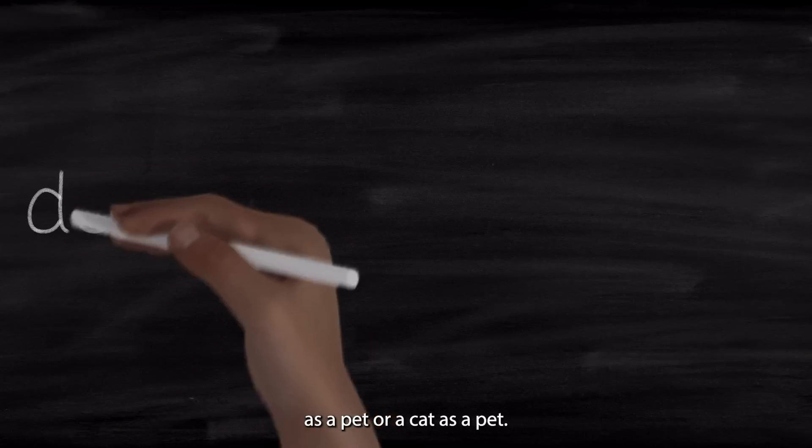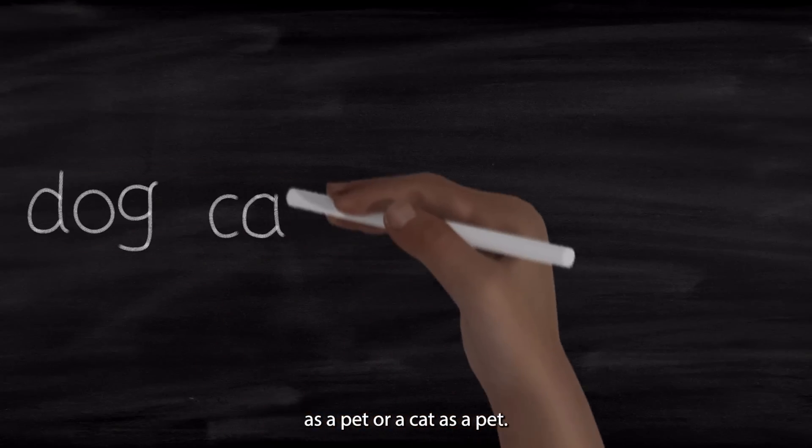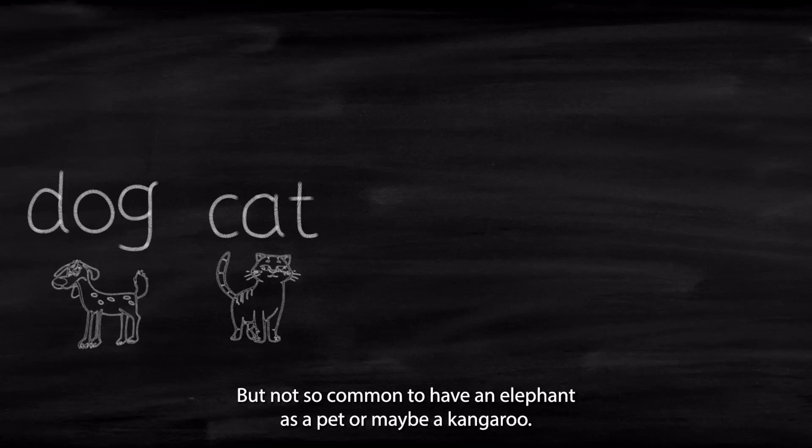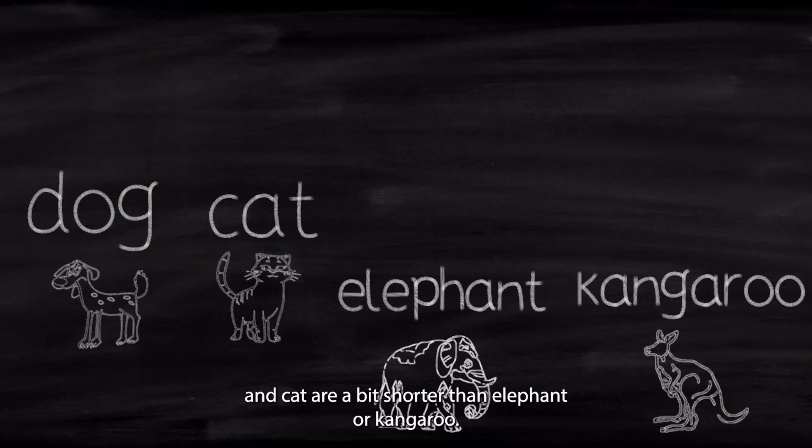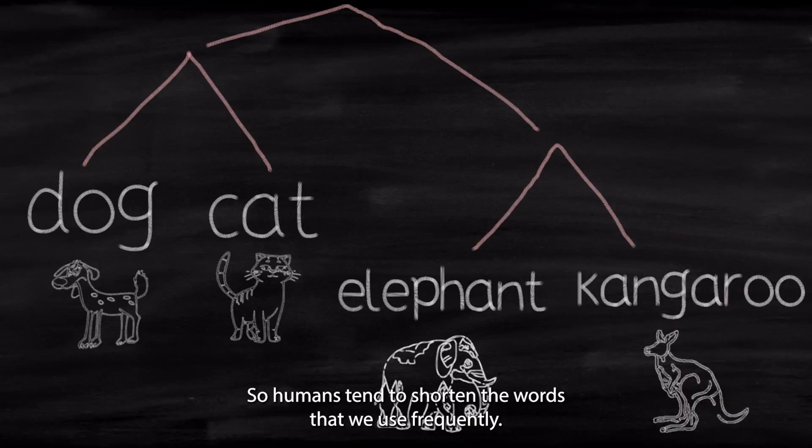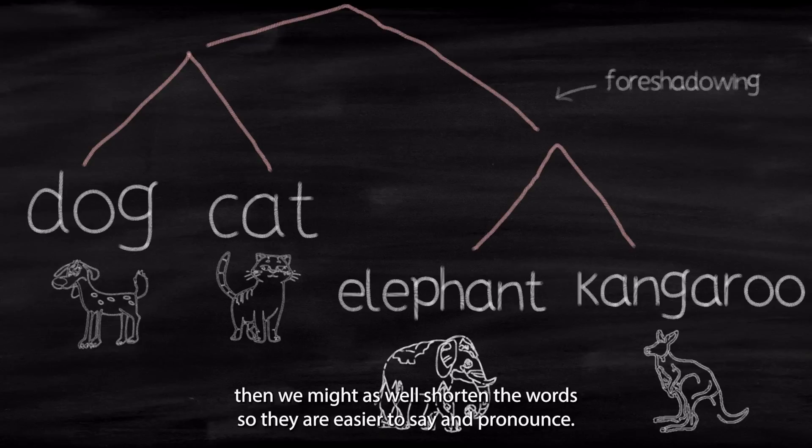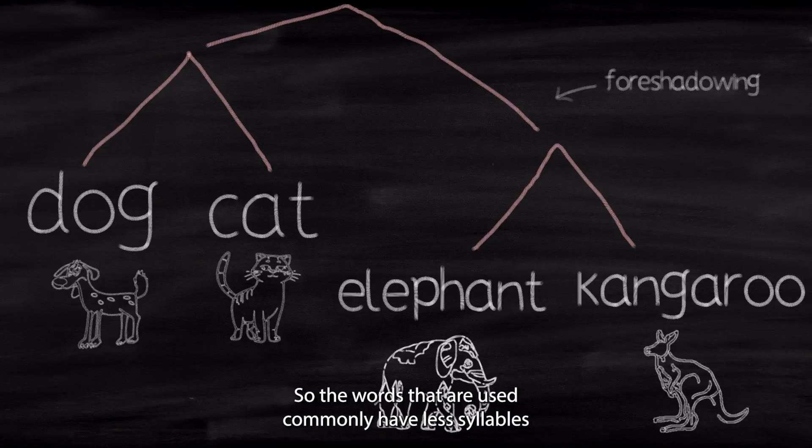It is very common to have a dog as a pet, or a cat as a pet, but not so common to have an elephant as a pet, or maybe a kangaroo. And you might notice that words like dog and cat are a bit shorter than elephant or kangaroo. So humans tend to shorten the words that we use frequently.